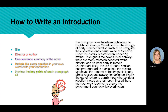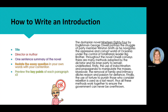Then my contention: 'Throughout the novel, Orwell conveys there are many methods adopted by the dictator and his inner party to remain undefeated.' That's essentially the essay topic. Then I need my three ideas — no character names and no examples. 'Firstly, the use of indoctrination and propaganda to manipulate the masses. Moreover, the removal of family and intimacy dilutes reason and passion for defiance. Finally, the use of torture to punish those who consider rebellion is used as a last resort. Thus, all these methods work together to ensure the government can never be overthrown.' There, I've given you my three paragraphs in summary.